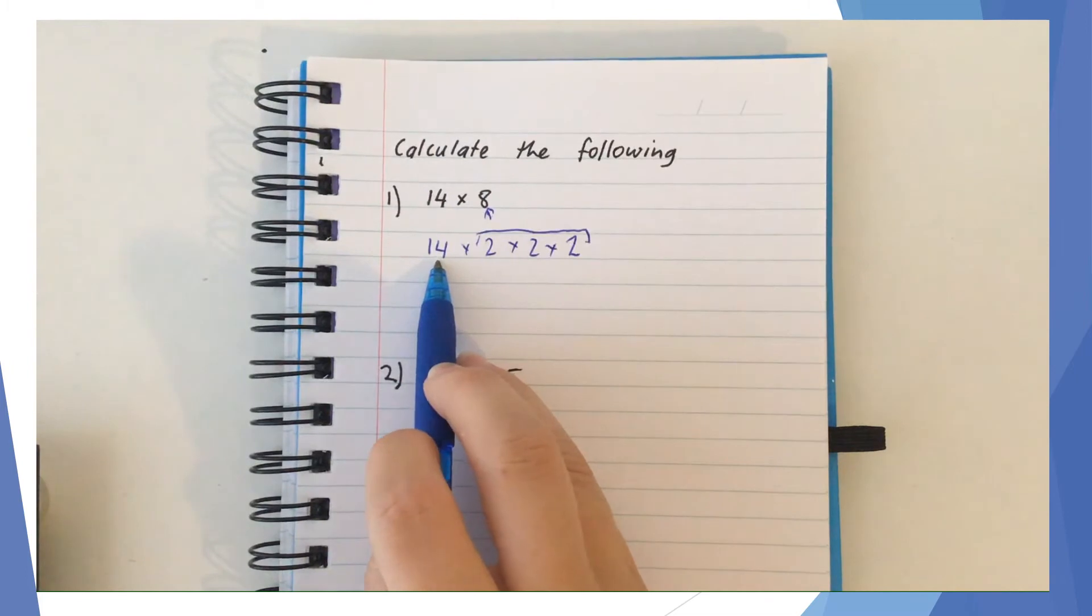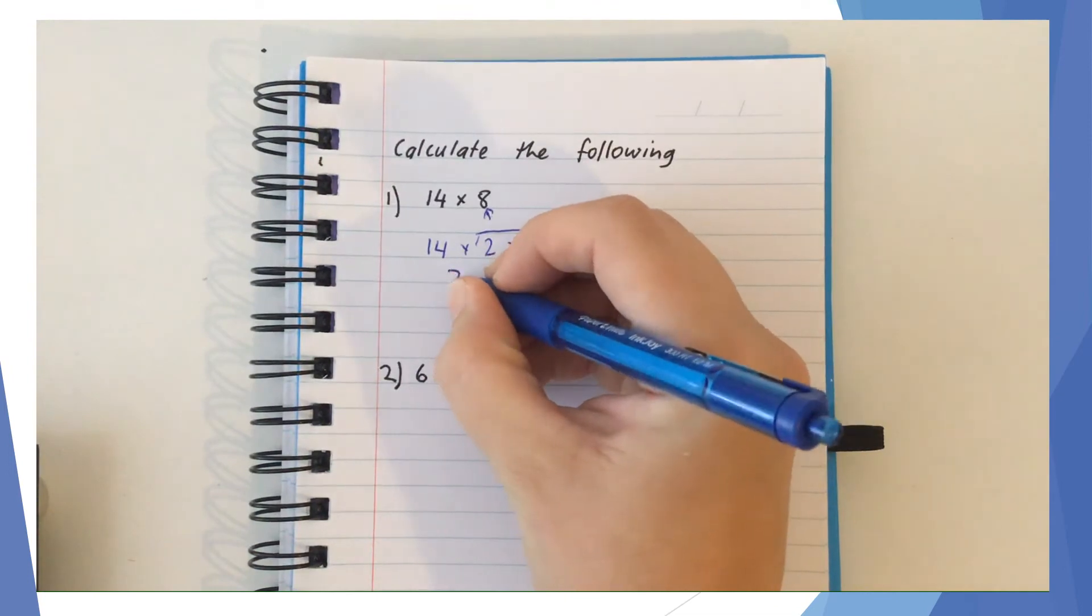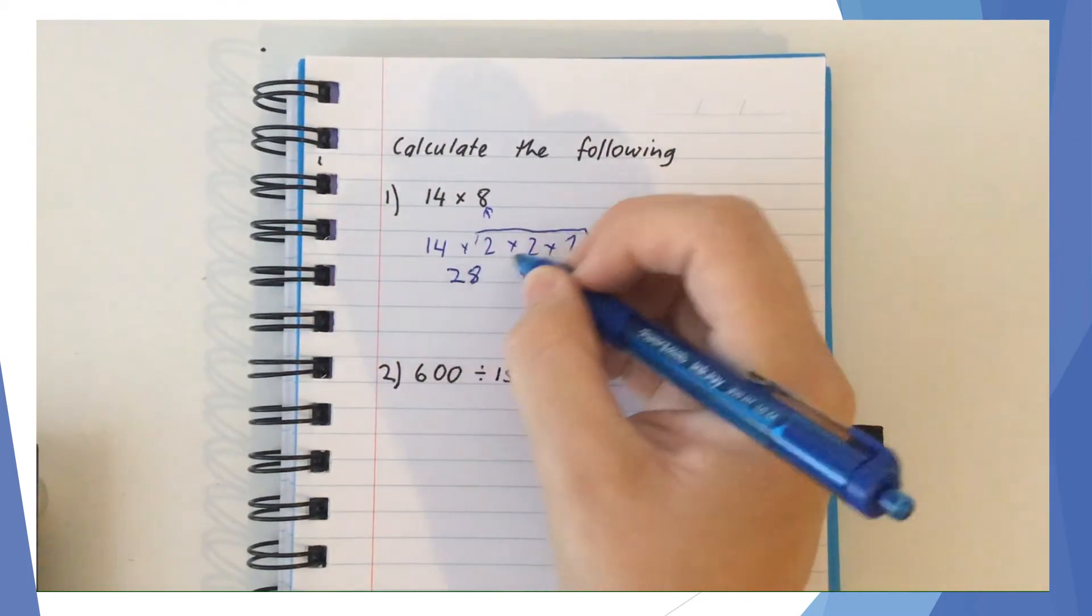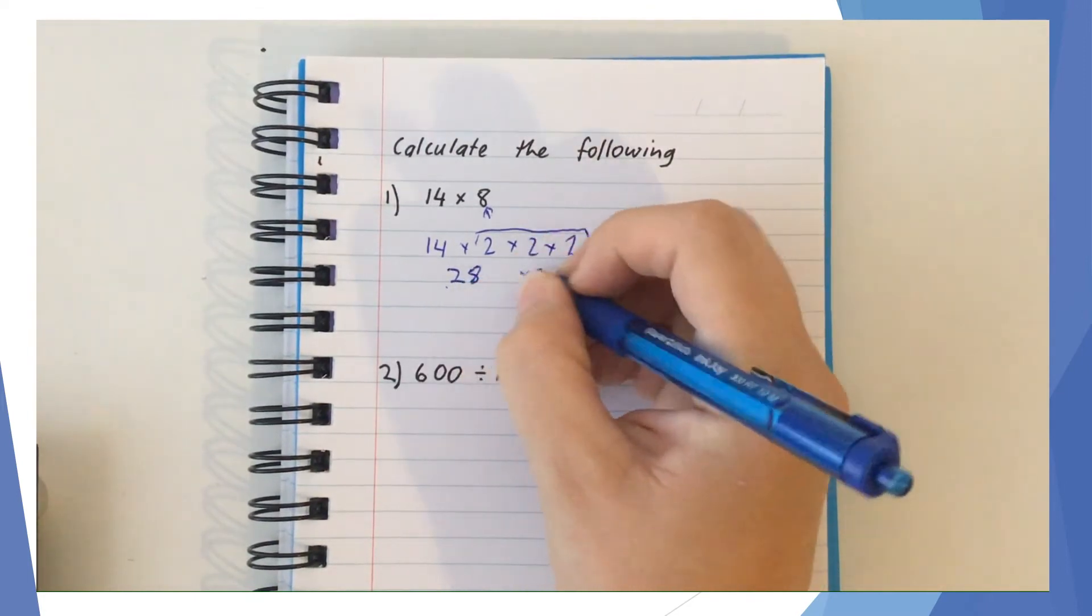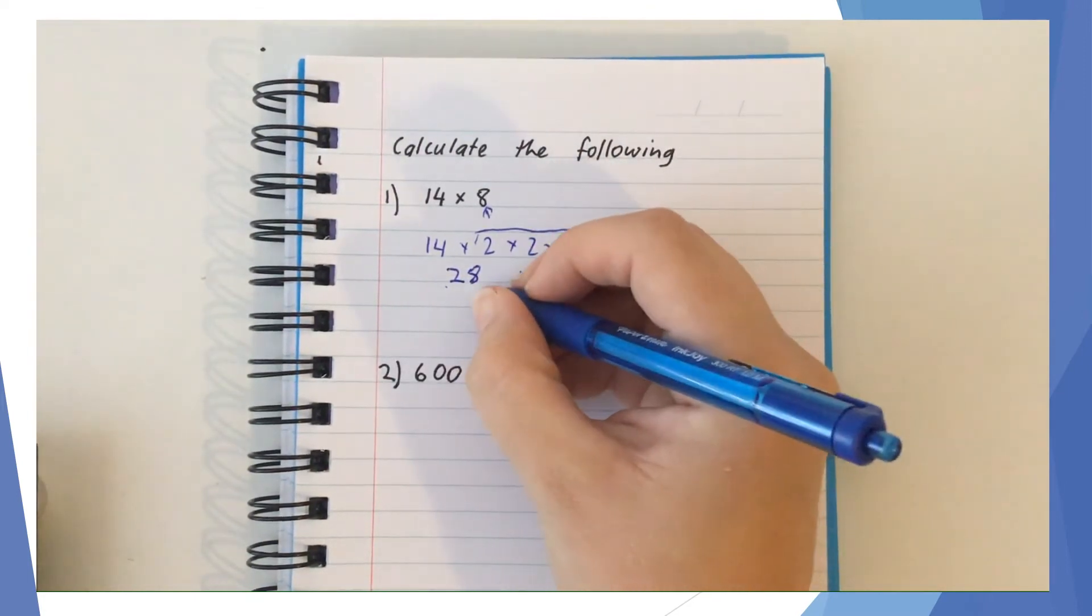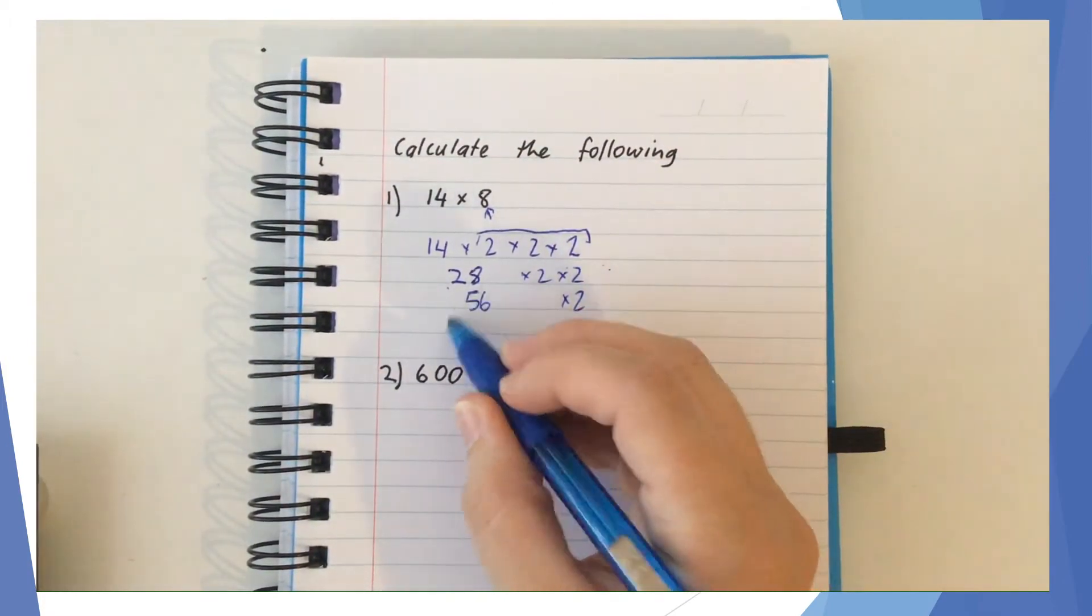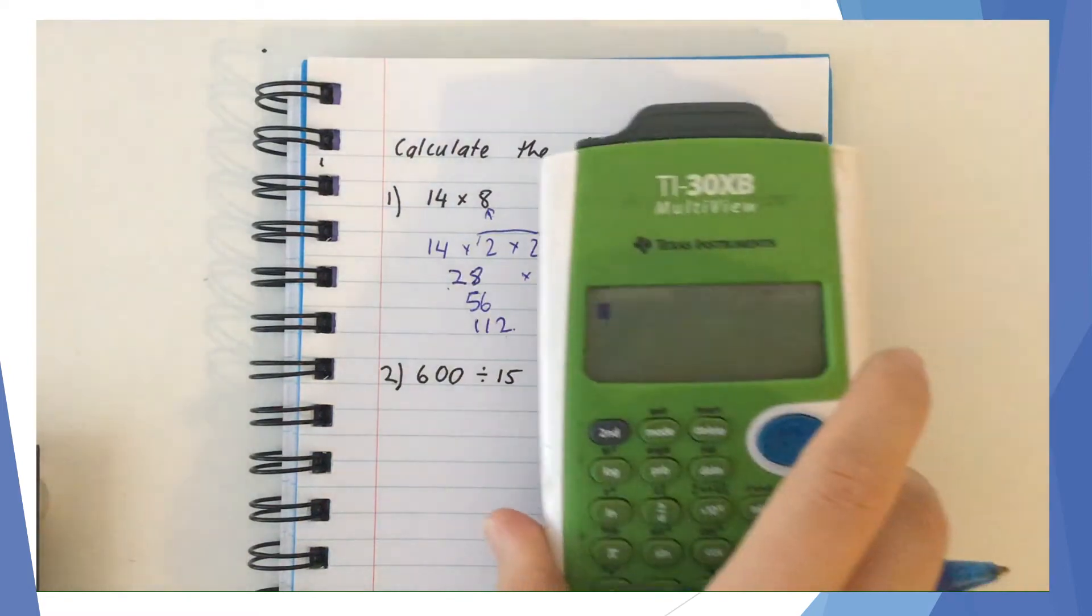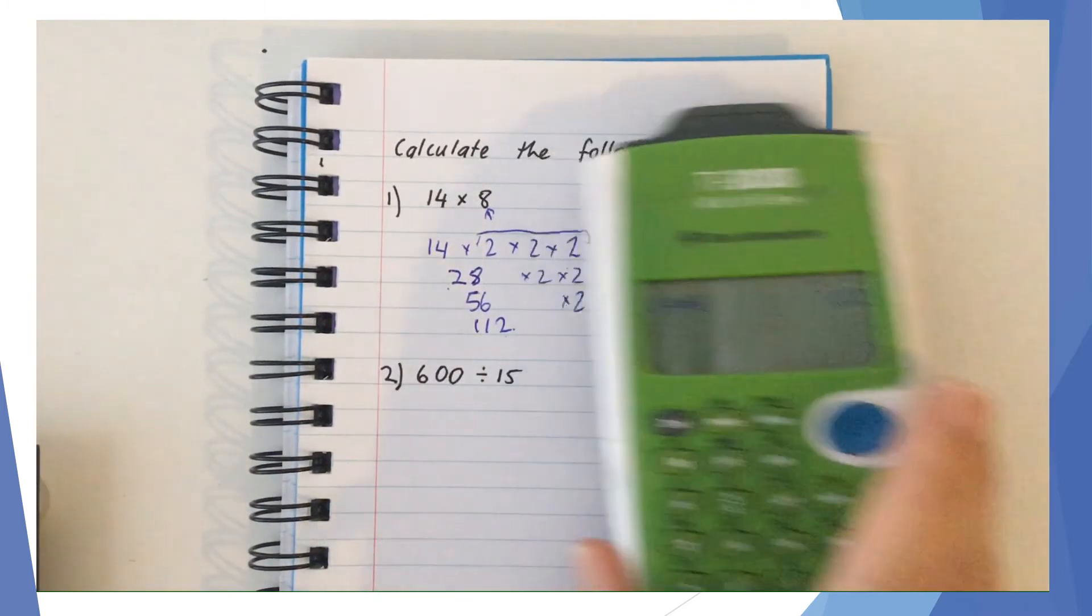What I'm going to do is just double as I go along. 14 times 2, or 14 doubled, is 28, and I still need to times 2 and times 2. I'm going to double 28 again - 28 times 2 is 56, and I've still got 1 times 2 left. Then double 56 - 56 times 2 gives me 112. If I check that answer on my calculator, 14 times 8 is 112, so the answer is correct.